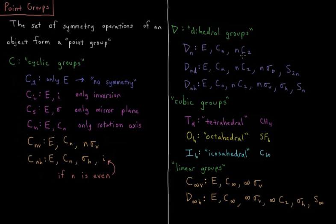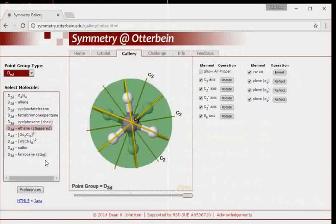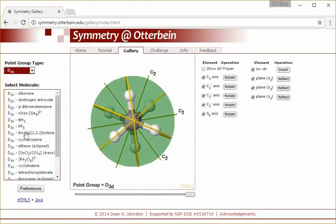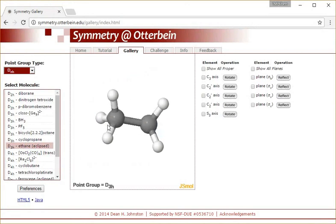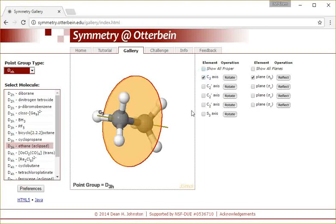DNH would be the same set of things that D groups all have, but now you have N sigma Vs and you also have a sigma H. So you have something that's perpendicular to the original group. So eclipsed ethane would be D3H. Let's see if they have that—ethane eclipsed—and they do. So you can see it's pretty similar symmetry, but now we have this sigma H perpendicular to our C3 axis. So that is a D3H molecule.